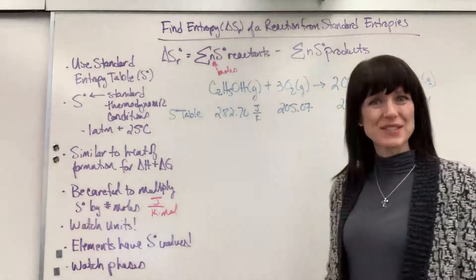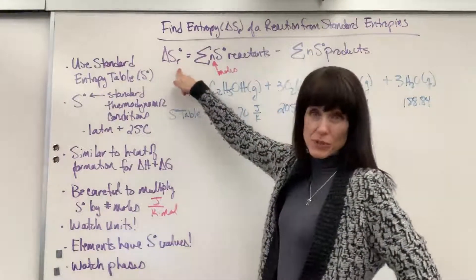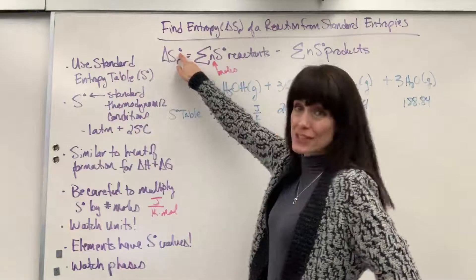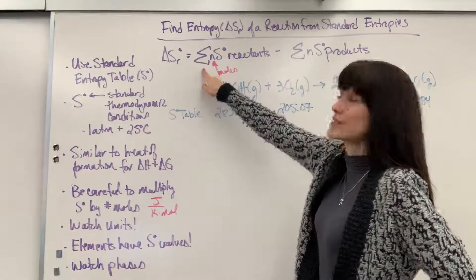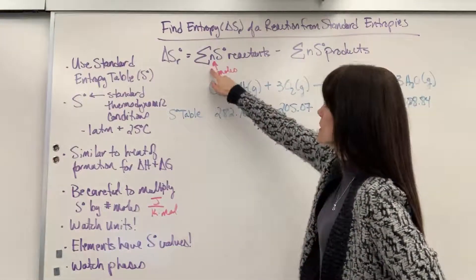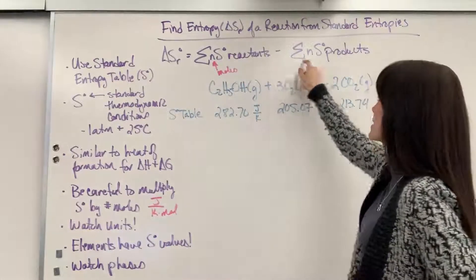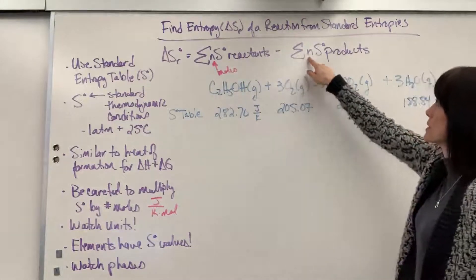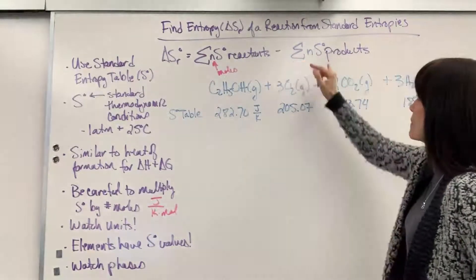Okay, so here is our formula to find the change in entropy for a reaction. That's what that subscript R stands for. And we're at standard conditions. Remember, 25 degrees C, 1 atm. This sigma symbol is the sum. It's going to be the summation of the moles times the standard entropy for reactants minus the sum of the moles times the standard entropy of the products.